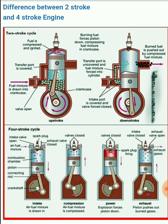In the four-stroke cycle, you can see that to complete all these processes — suction, compression, power stroke, and exhaust — it takes two rotations to complete one cycle. That is the first important difference between the two-stroke cycle and the four-stroke cycle.